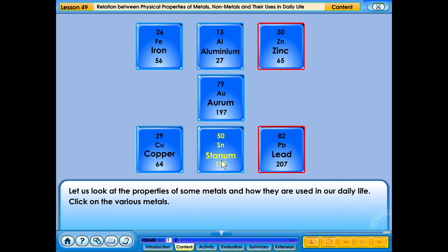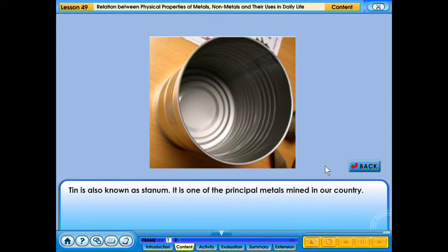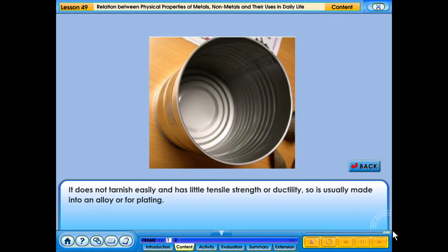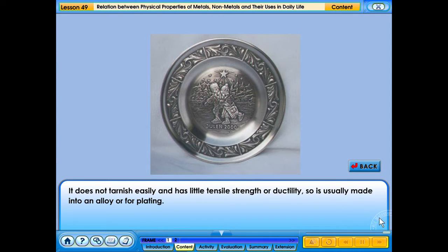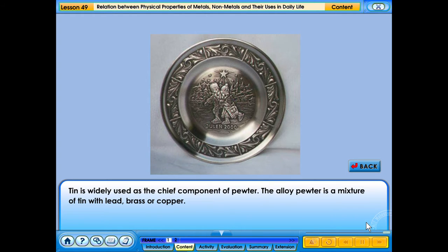Use of tin in daily life. Tin is also known as stannum. It is one of the principal metals mined in our country. It does not tarnish easily and has little tensile strength or ductility, so it is usually made into an alloy or for plating. Tin is widely used as the chief component of pewter. The alloy pewter is a mixture of tin with lead, brass or copper.